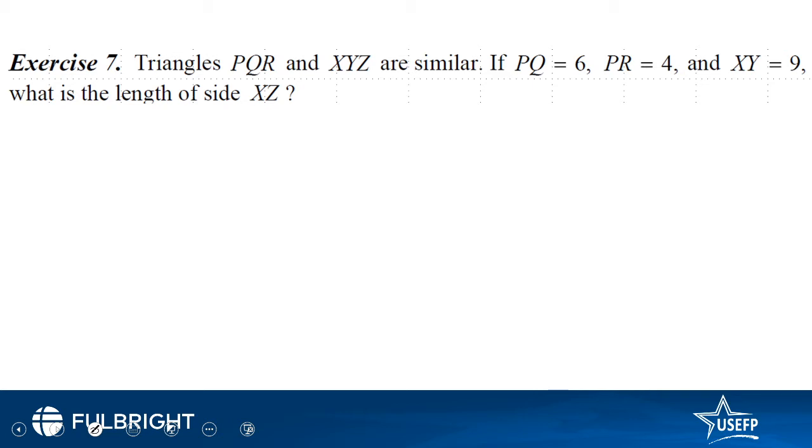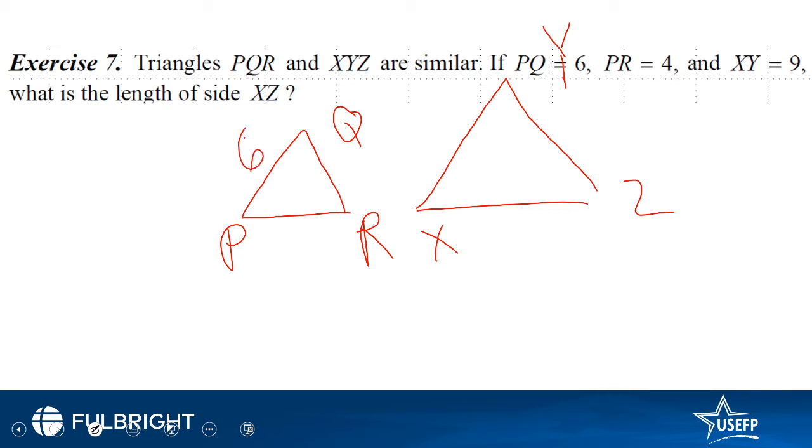The next question is of similar triangles. PQR and XYZ are similar. If PQ is equal to 6, PR equals 4, XY equals 9, what is the value of length XZ? So these two triangles, we draw them first. So PQR and XYZ. So while drawing them we keep the order like PQR and XYZ.